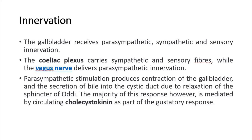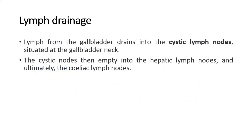For lymphatic drainage, lymph from the gallbladder drains into the cystic lymph nodes, situated at the gallbladder neck. The cystic nodes then empty into the hepatic lymph nodes, and ultimately, the choleic lymph nodes.